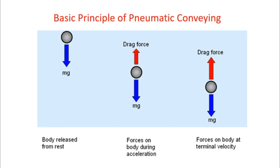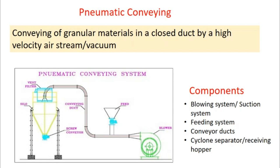Granular materials in a food processing industry are conveyed using pneumatic conveying. The granular materials are conveyed through a closed duct or pipeline using a high velocity air stream or by subjecting to vacuum. The basic components of a pneumatic conveying system are: a blowing system, a feeder, and a conveying pipe or duct.